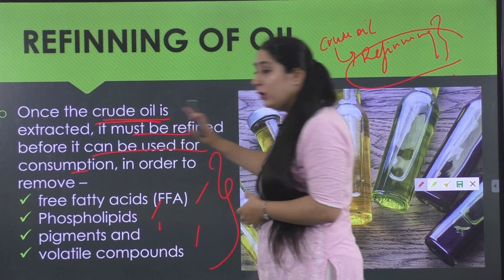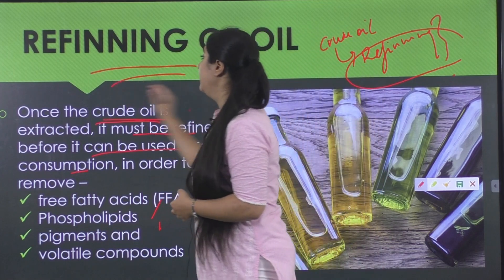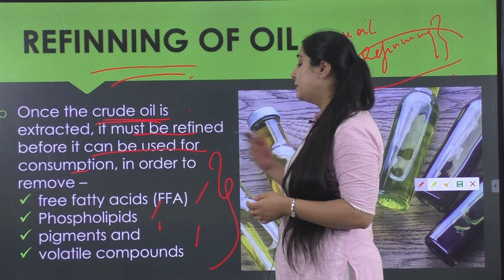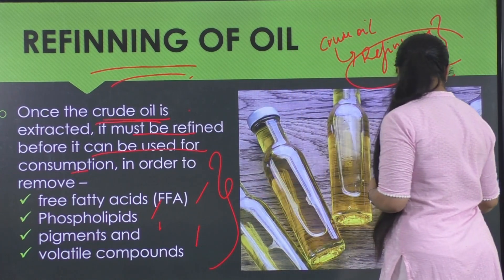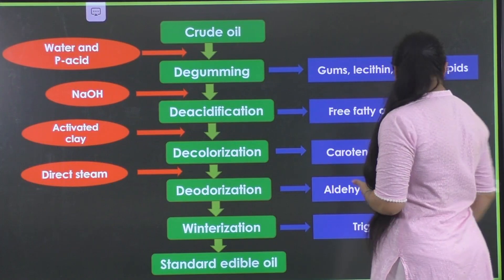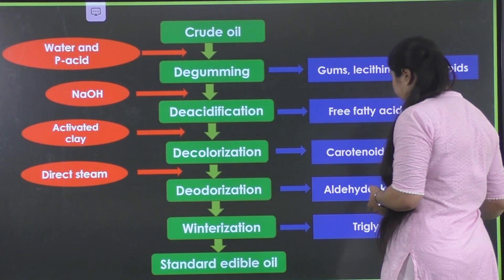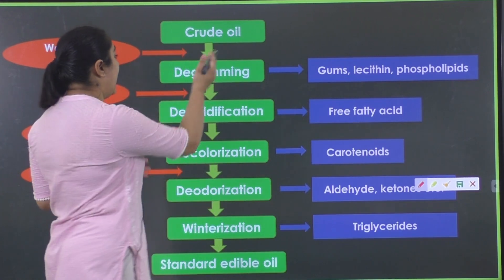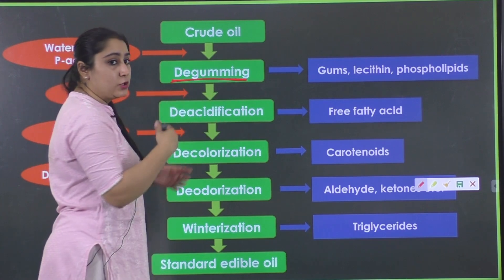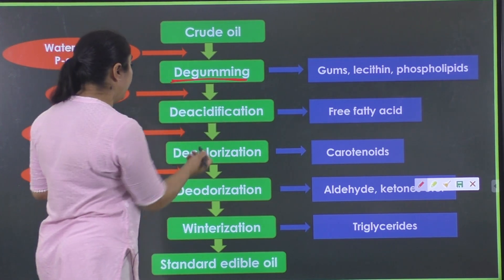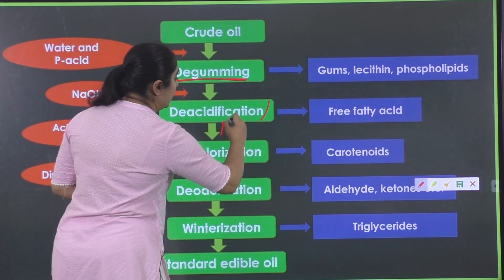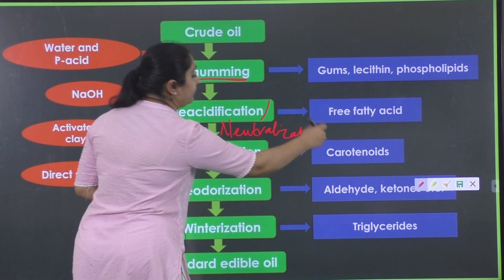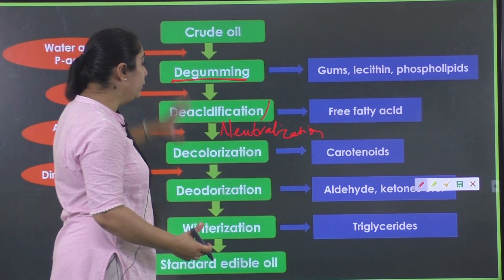So to remove all of these, we perform the refining process of the oil. The refining process consists of five basic steps. Starting from crude oil, first we have de-gumming, and then neutralization — which is also known as de-acidification. Basically these two are done together: de-gumming and the neutralization process.